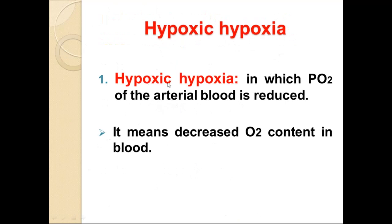Hypoxic hypoxia is a condition in which the partial pressure of oxygen in the arterial blood is reduced. This means that when blood reaches the arterial side, the oxygen content within it is decreased. This is essentially inadequate oxygenation of blood in the lungs.